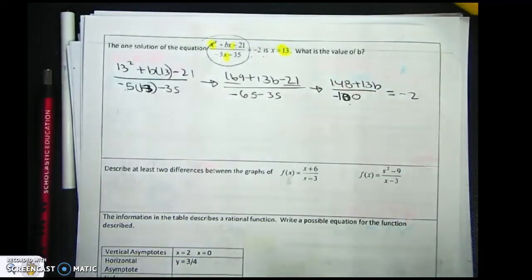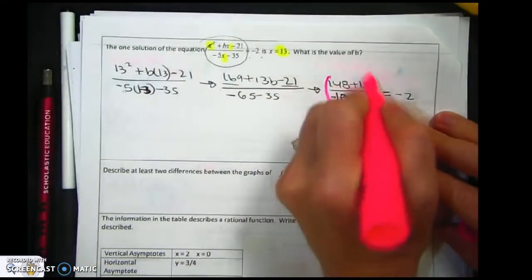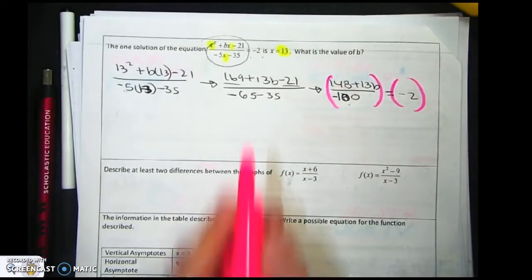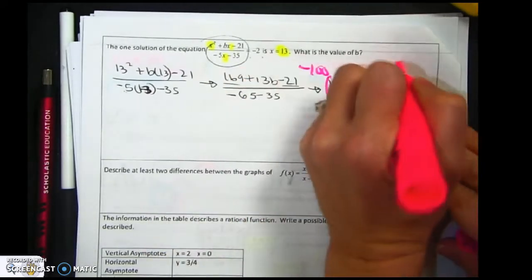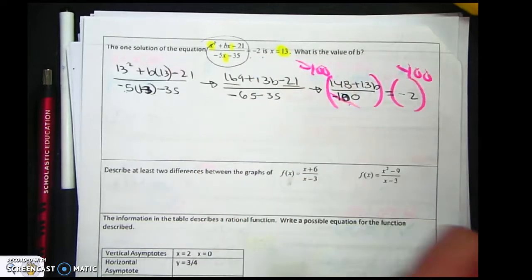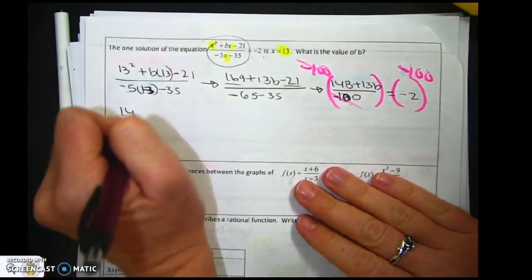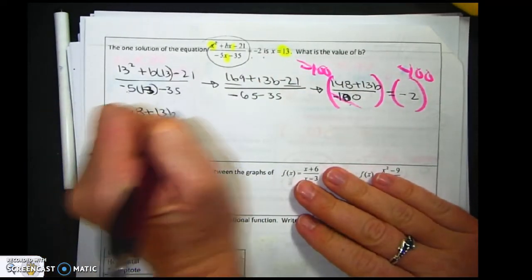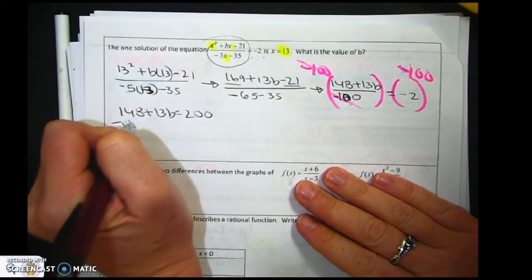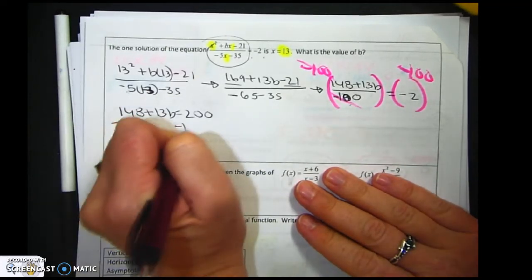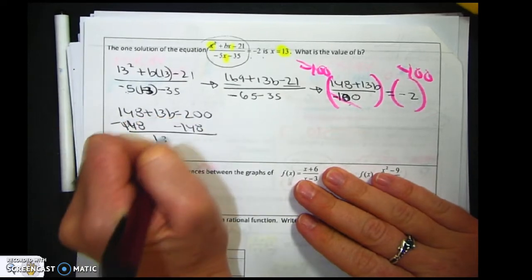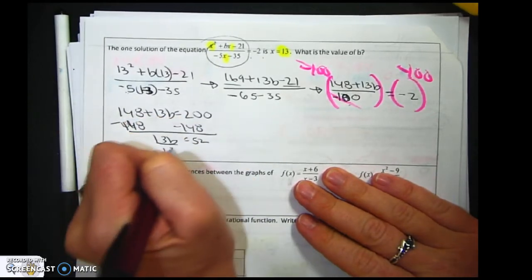Let's try that again. Now I'm going to solve this thing. So I'm going to multiply both sides by negative 100. And then that will cancel that. And I'm left with 148 plus 13b equals 200. Subtract 148.